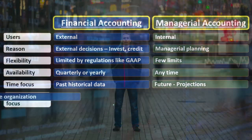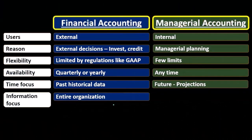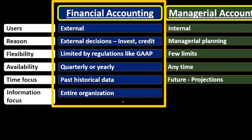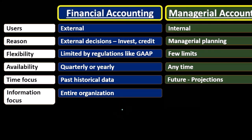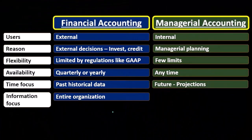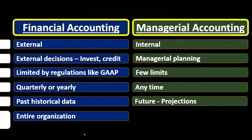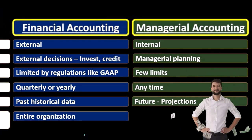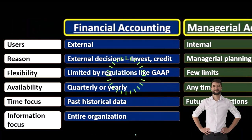If we look at the information focus, it's going to be on the entire organization for financial accounting. We're looking for information that's going to affect the entire organization, and that's by design. The financial statements are there for the entire organization because investors and creditors are typically worried about the entire organization. They're not really looking into the detail or at segments of the organization. For the most part, the reporting is going to give a whole picture — what do things look like as an entire?